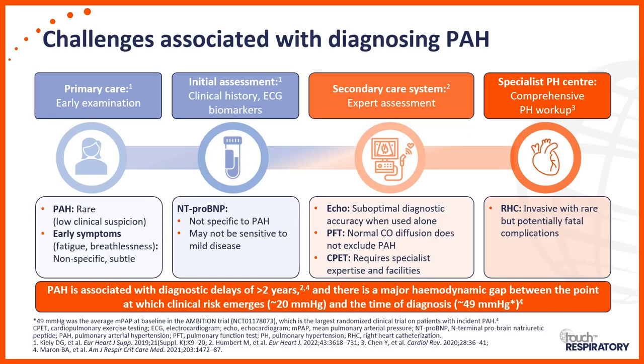We know that the sooner the diagnosis is made and the patient is started on appropriate therapy, the more likely they are to have a good response and a better outcome. Early suspicion and basic workup, including an echo, are essential. If the echo is abnormal and or biomarkers are dramatically abnormal, these patients should be referred to a specialized pulmonary hypertension center for comprehensive evaluation and appropriate treatment. Right heart catheterization, although invasive, is remarkably safe — in appropriate hands the risk of morbidity and mortality is less than 0.1%.